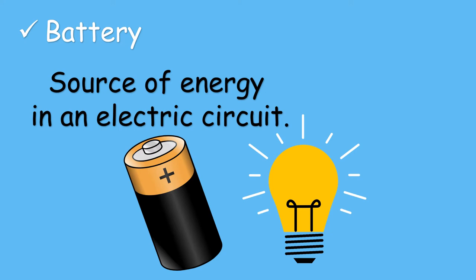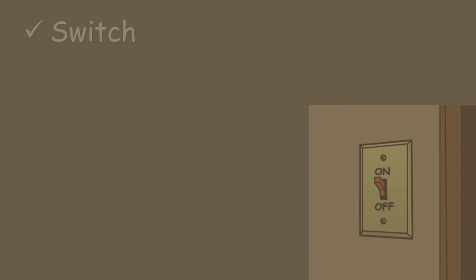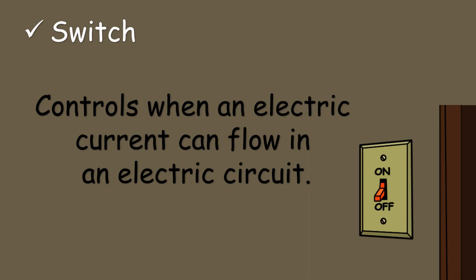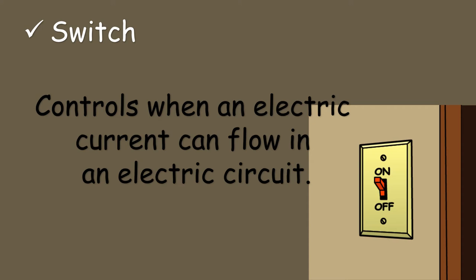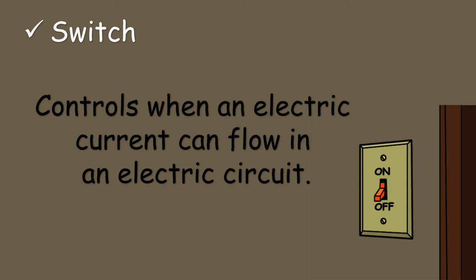Next, we have the switch. It controls when an electric current can flow in an electric circuit. The electric current flows if the switch is on and stops if the switch is off.